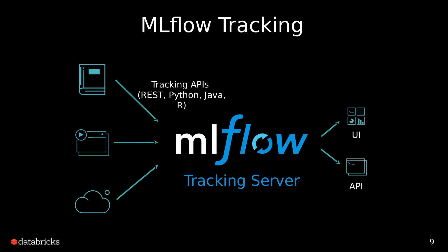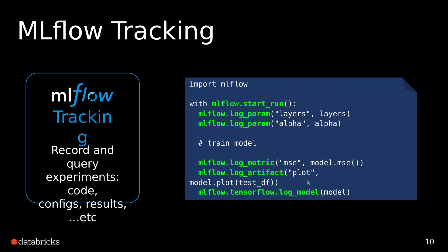MLflow Tracking has a user interface and a Python API. You can also use it in an organization — if you have many data scientists working on the project, you can use MLflow Tracking to see the metrics of other data scientists. This is an example of code for MLflow Tracking — very easy. You open a context manager and then log what parameters you want. Log param is for logging parameters, log metric is for logging metrics, log artifact is for logging files such as plots, and log model is for logging the model itself.